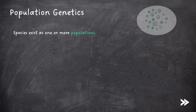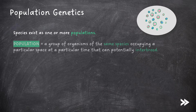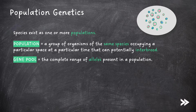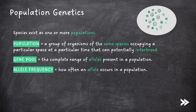Species exist as one or more populations. A population is a group of organisms of the same species occupying a particular space at a particular time that can potentially interbreed. The gene pool is the complete range of alleles present in a population. The allele frequency is how often an allele occurs in a population and is given as a decimal or a percentage.